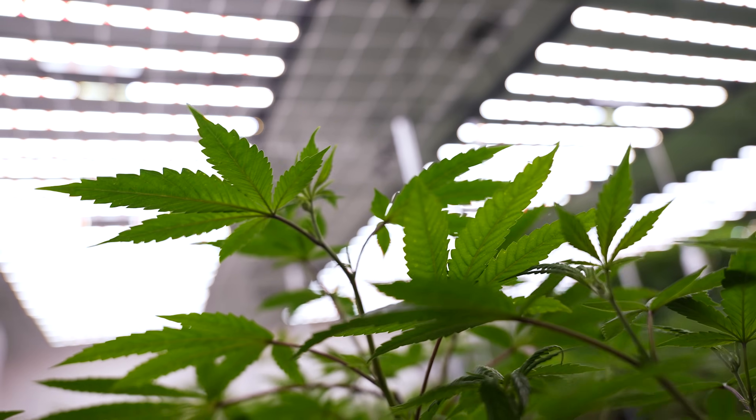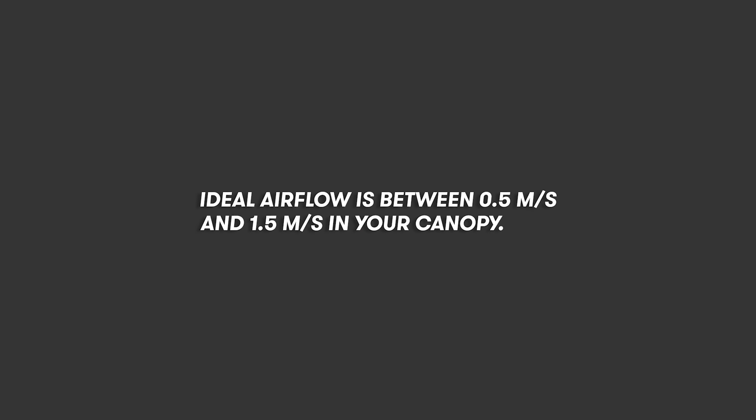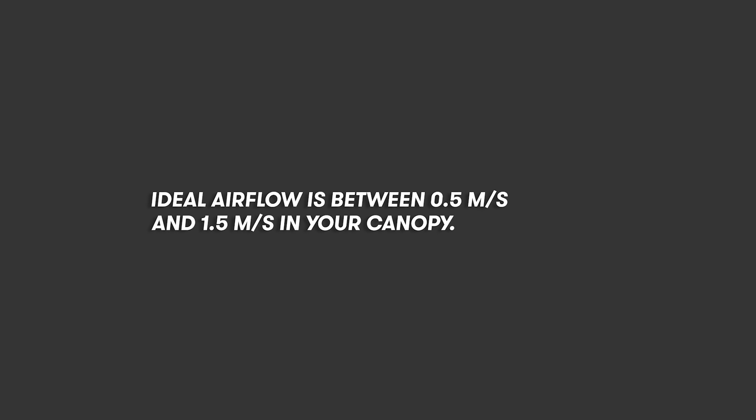On the other hand, if airflow is above 1.5 meter per second, we might see non-uniform transpiration levels. This can translate to plants drying down at different rates — some plants drying out too fast or staying too wet. If the airflow in your room is not uniform, either because it's too low or too high, you may have issues with irrigation in which the plants are not drying back as they should.